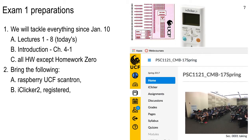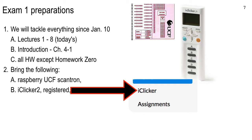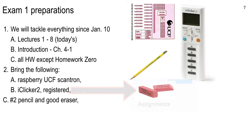The iClicker must be registered. If you haven't registered, go to the iClicker tab on the left side of the screen in webcourses and register there. The iClicker.com website will allow you to register, but that doesn't synchronize to my roster — I synchronize to webcourses. So you've got to use the webcourses tool.